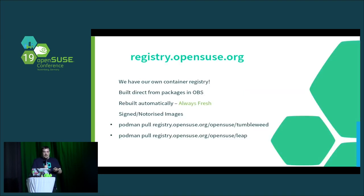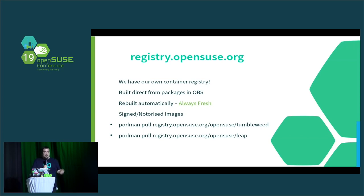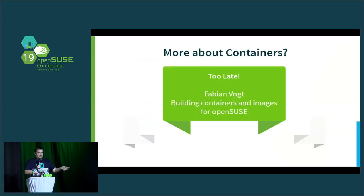We have registry.opensuse.org now. It's building containers directly from OBS, rebuilding those containers as OBS rebuilds the packages so the containers are always fresh. They're signed, they're notarized. With Podman it's nice and simple — you can run a single command, download the latest official Tumbleweed or Leap container. If you want to know more and you weren't here half an hour ago, just watch the video — Fabian did a really good job explaining how we can build those containers and how you can contribute.